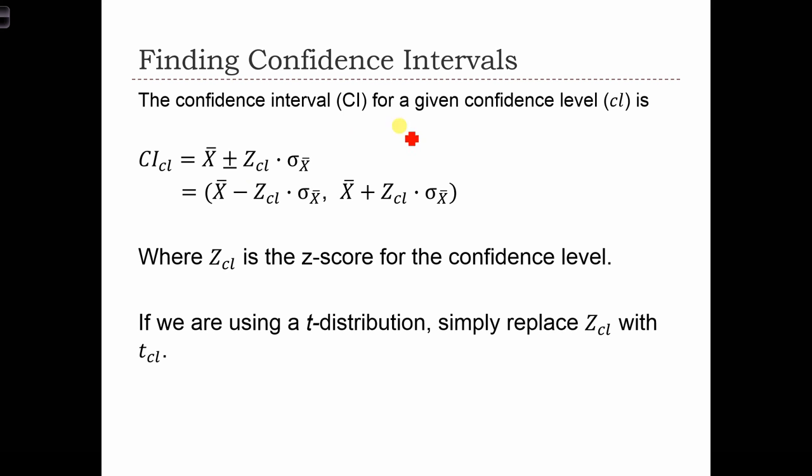Generally speaking, the confidence interval for a confidence level is equal to x-bar plus or minus a z-score times the standard error of the mean.